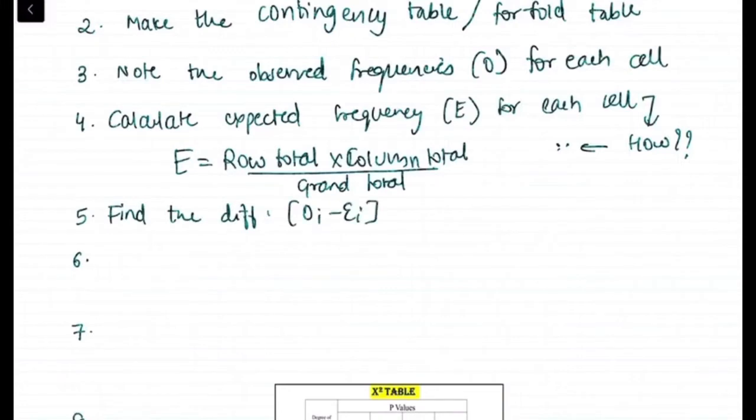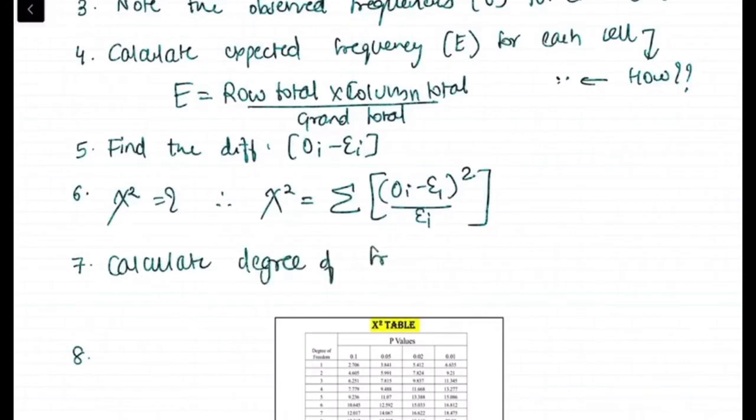Now fifth step is finding the difference between observed and expected, Oi minus Ei. So chi-square is given by formula sigma Oi minus Ei square divided by Ei.